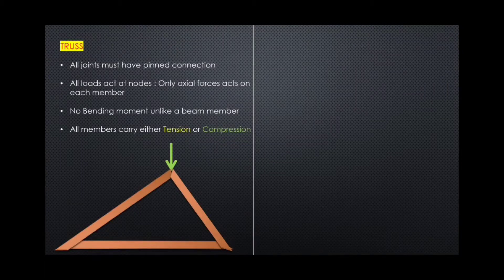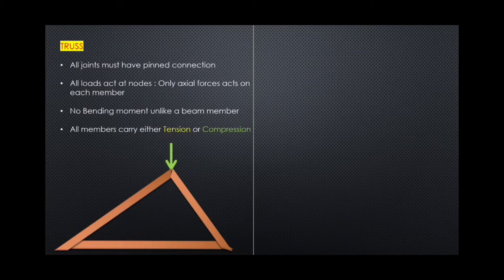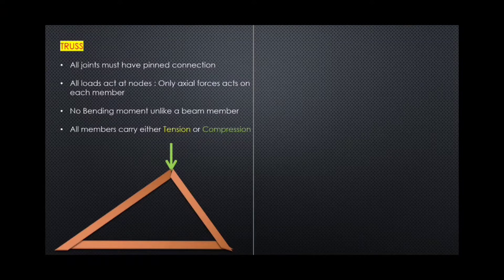The triangle is the basic element of a truss. The sum of angles in a triangle is 180 degrees. If a load is applied, this triangle does not deform — it would require changing the length of a member to change its shape. This makes the triangle a rigid, stable element.